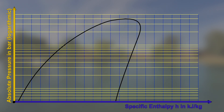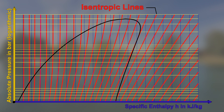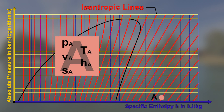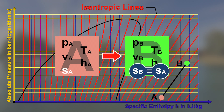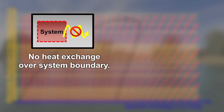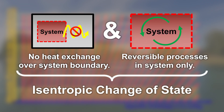In every point in the diagram, the fluid has a certain specific entropy s, which is a measure for the reversibility of processes. If points with the same specific entropy are connected with each other, the isentropic lines become visible. If a state of a fluid changes from state A at constant specific entropy s along an isentropic line to state B, we call it an isentropic change of state. This is the case if no heat is exchanged between the system and the environment and only reversible processes take place in the system.